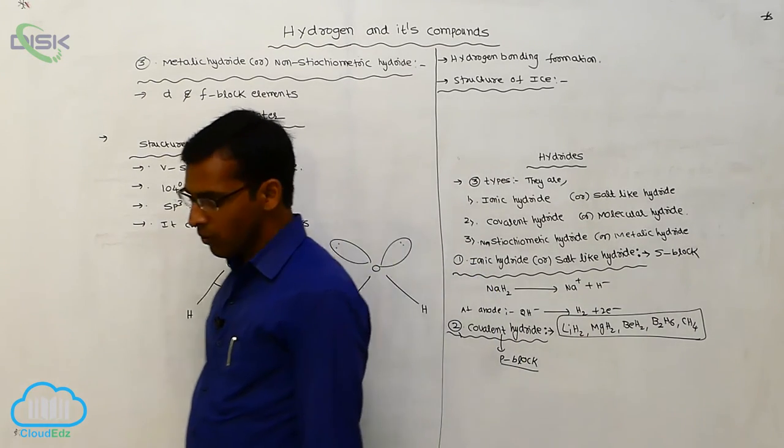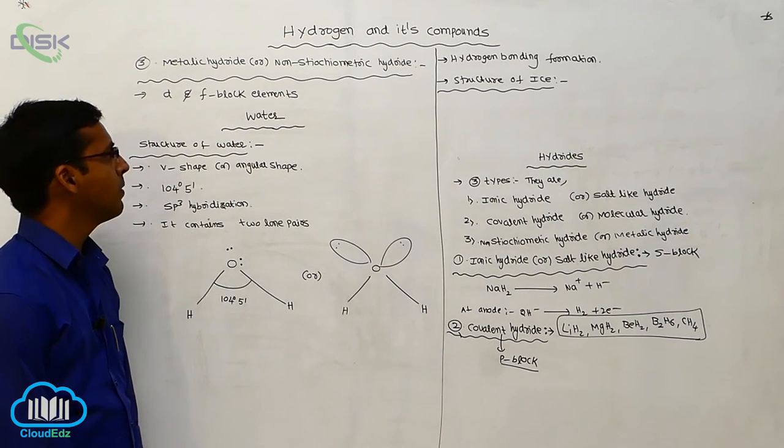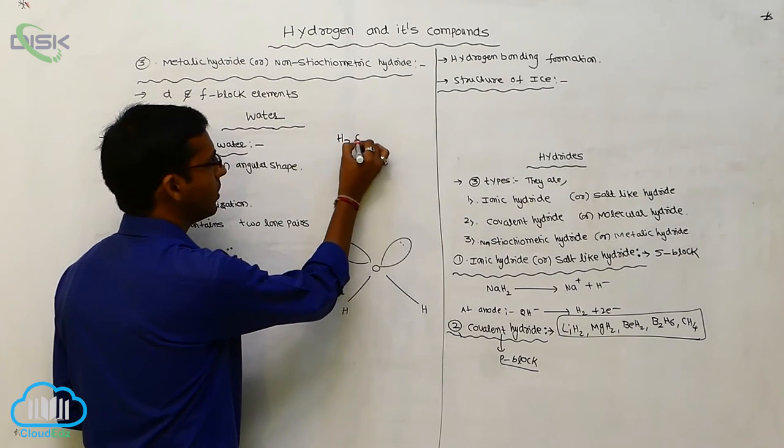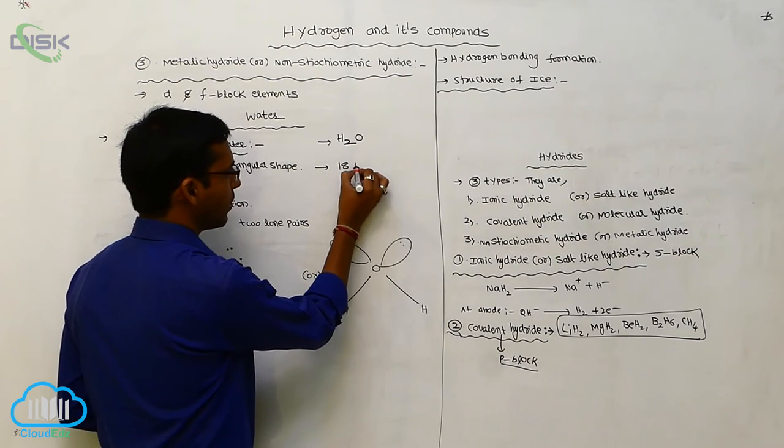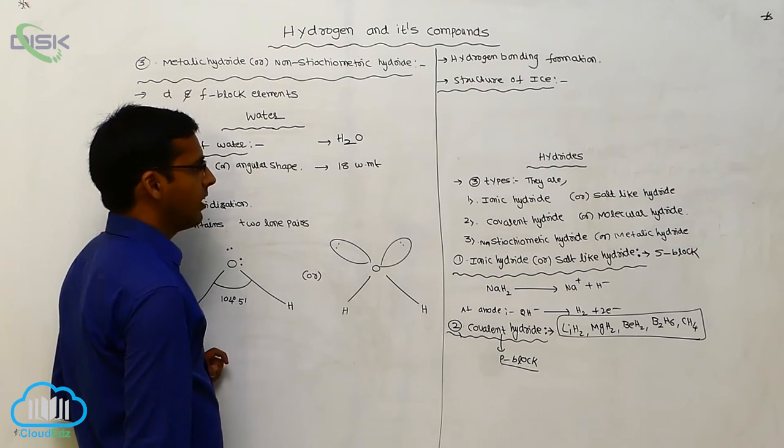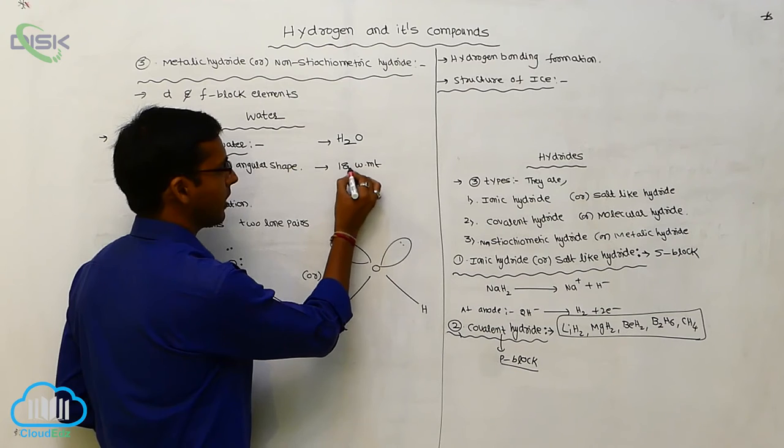This is our water component. This is the most important component for human beings. That is water. This water molecular formula is H2O. Its molecular weight is 18 grams.